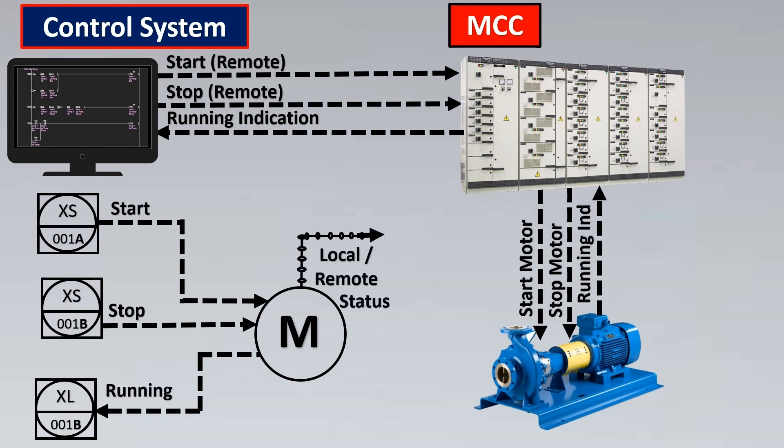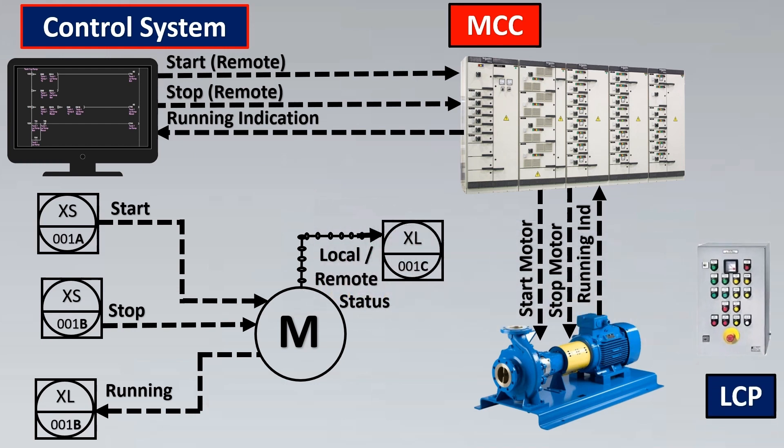Sometimes you have a local remote status shown on the control system side, called XL. What does this indication show? Actually, the motor can sometimes also be controlled via a local control panel, short form LCP.